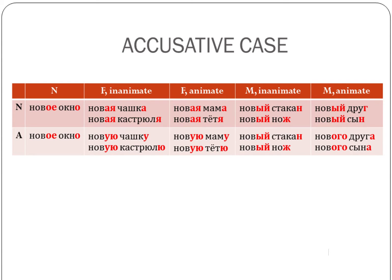Здравствуйте! This is our last video here and we've been discussing the accusative case. We summarized what we've already known: in the accusative case, И changes to У, and everything else stays the same. That applies to all four columns, which cover neuter nouns — and neuter nouns are always inanimate — as well as feminine inanimate and feminine animate nouns.